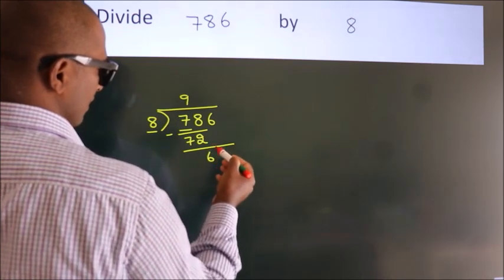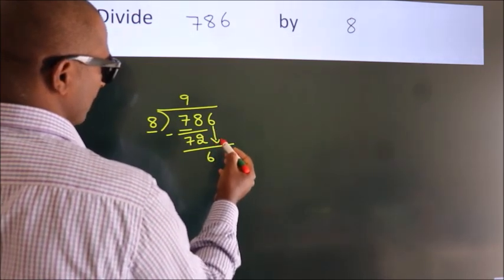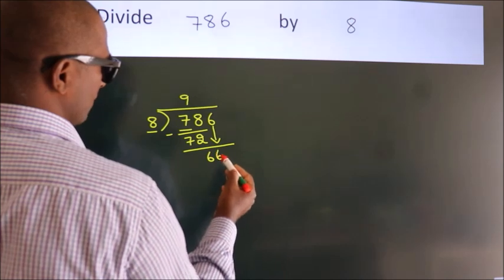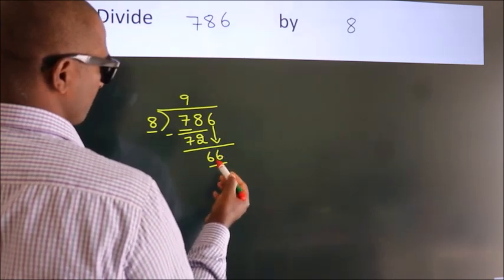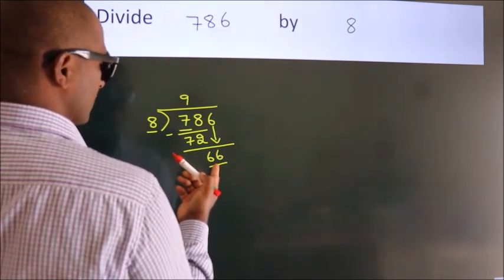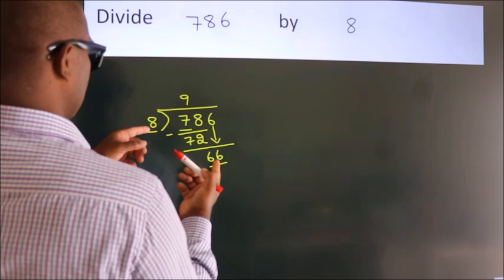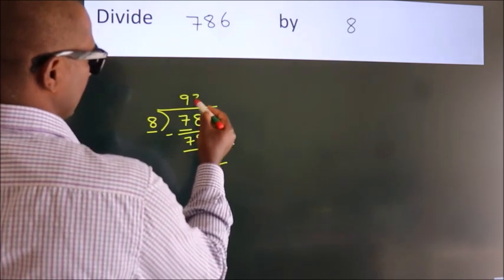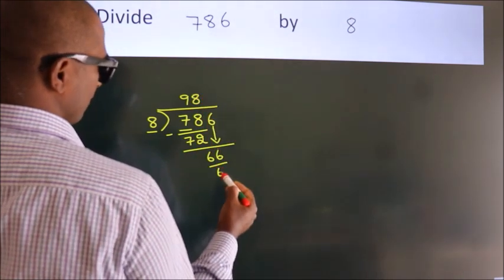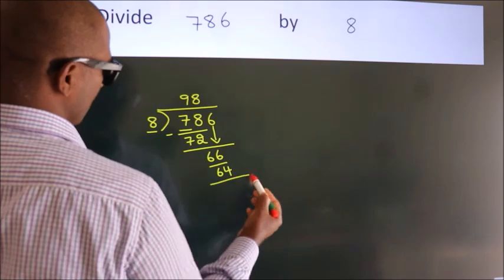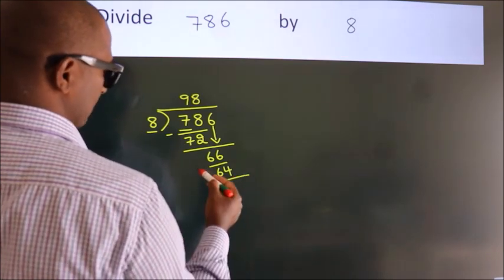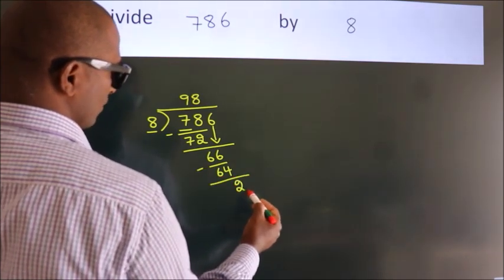After this, bring down the beside number. So 6 down, giving us 66. A number close to 66 in the 8 table is 8 eights, 64. Now we subtract. We get 2.